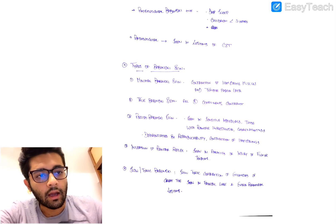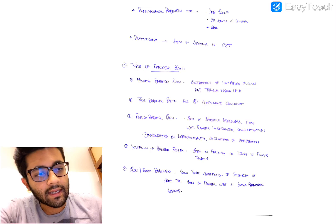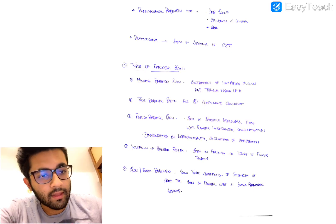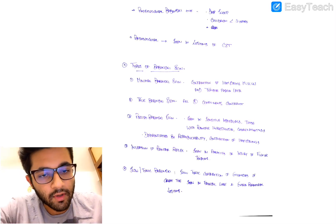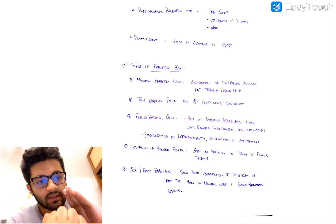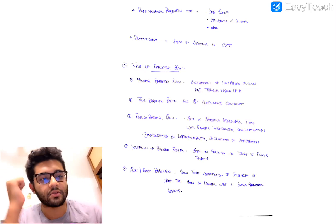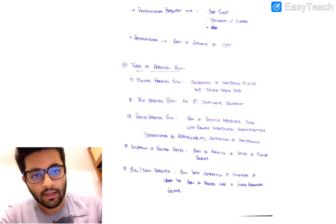Inversion of plantar reflex is seen when there is injury to the flexor tendons of the foot or paralysis of the muscles causing toe flexion. When flexor action is absent, the extensor response becomes more pronounced, and stimulation produces an extensor response. This is called inversion of plantar reflex.